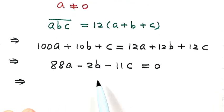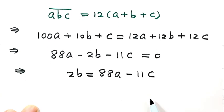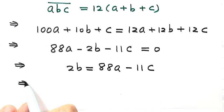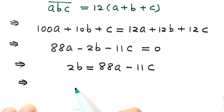Now bring 2B to the other side. Then 2B = 88A - 11C. Taking out the common factor on the right-hand side, we get 2B = 11(8A - C). Now let's label this one as result 1.